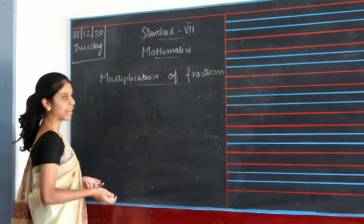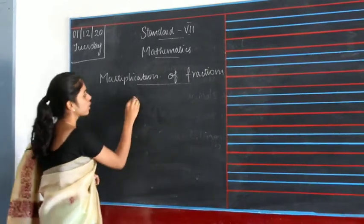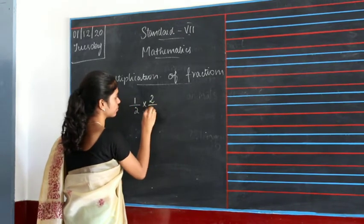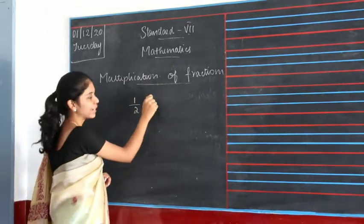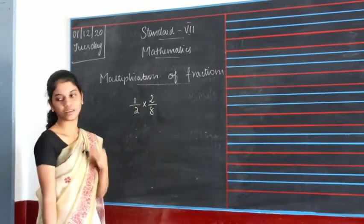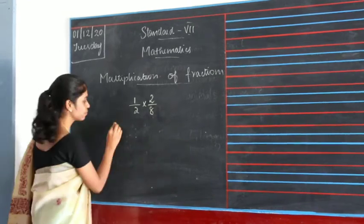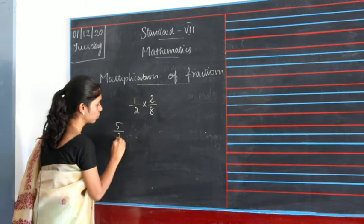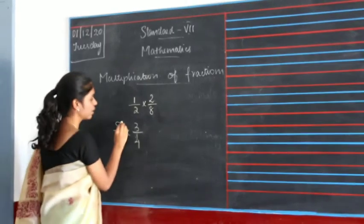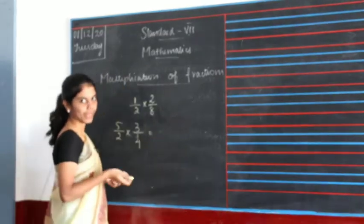In multiplication of fractions, if you are multiplying one fraction with another, you should multiply numerator with numerator and denominator with denominator. Let's see an example. If you have 5 by 2 and 3 by 4, then you should multiply 5 with 3 and 2 with 4. This is how we multiply fractions.